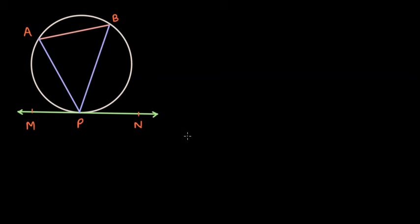In the Alternate Segment Theorem, basically what we have is a chord and a tangent. Whenever you see a triangle formed like this — by taking a chord as a side of the triangle and the vertex of the triangle is the point where the tangent touches the circle — that's where you can assume it could be the Alternate Segment Theorem. We will come to the statement of this theorem later.